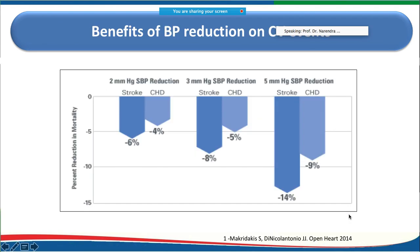The benefits of controlling blood pressure are immense. Just a 2 mmHg reduction in systolic blood pressure reduces stroke risk by about 6% and coronary heart disease risk by 4%. A 3 mmHg reduction lowers stroke risk by 8% and coronary heart disease risk by 5%.